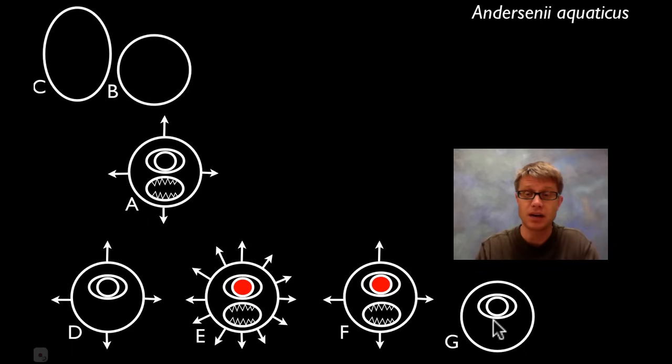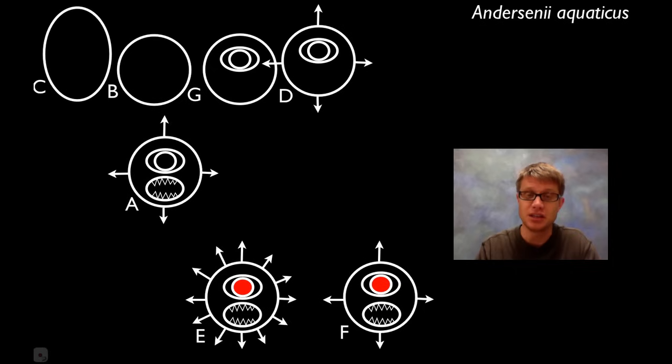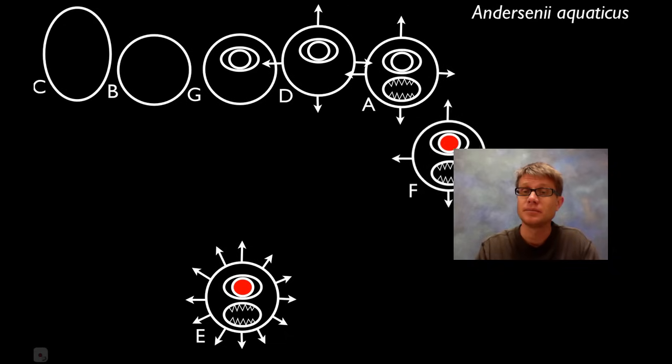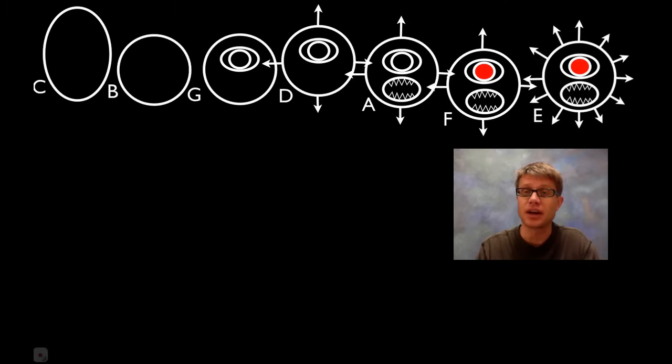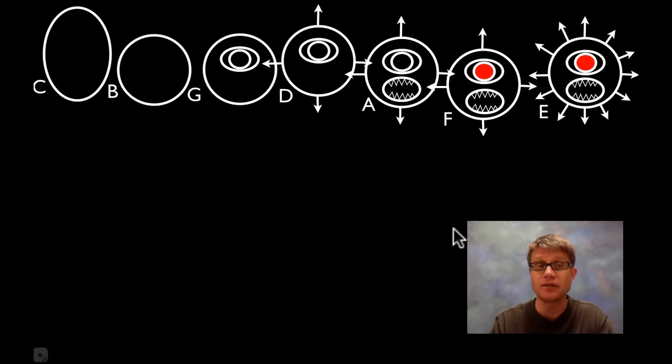Because it doesn't have an eye. But we're going to have that in G. So next would be G. Try to play along with me. What's the next one? That's right, it's D. And then after that A, then F, and finally E. So you could probably do that, just put them in order looking at what characteristics they have.